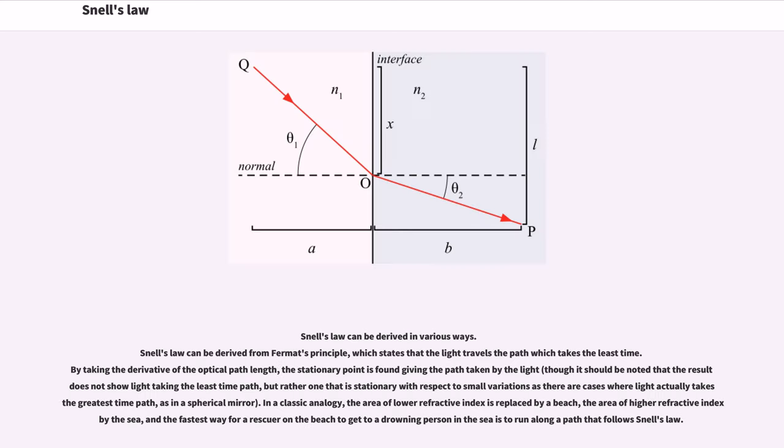Snell's law can be derived in various ways. It can be derived from Fermat's principle, which states that the light travels the path which takes the least time. By taking the derivative of the optical path length, the stationary point is found giving the path taken by the light. In a classic analogy, the area of lower refractive index is replaced by a beach, the area of higher refractive index by the sea, and the fastest way for a rescuer on the beach to get to a drowning person in the sea is to run along a path that follows Snell's law.